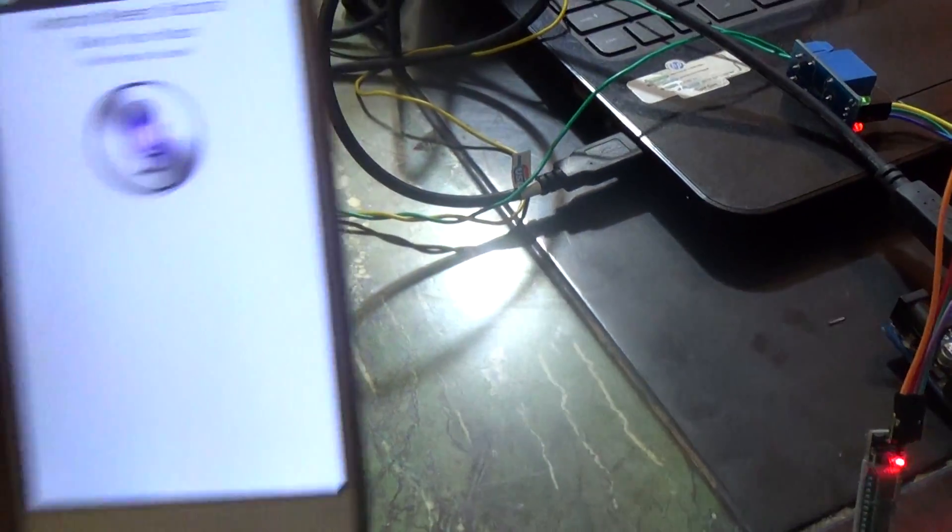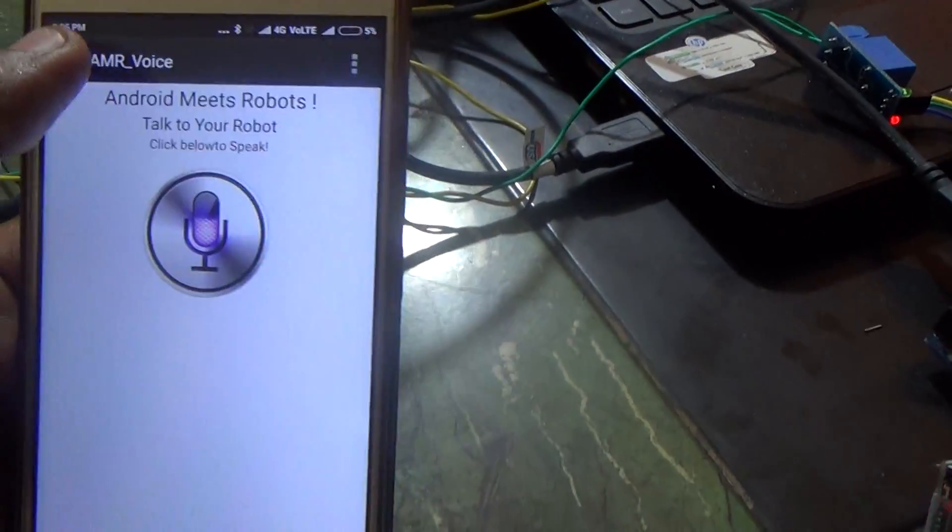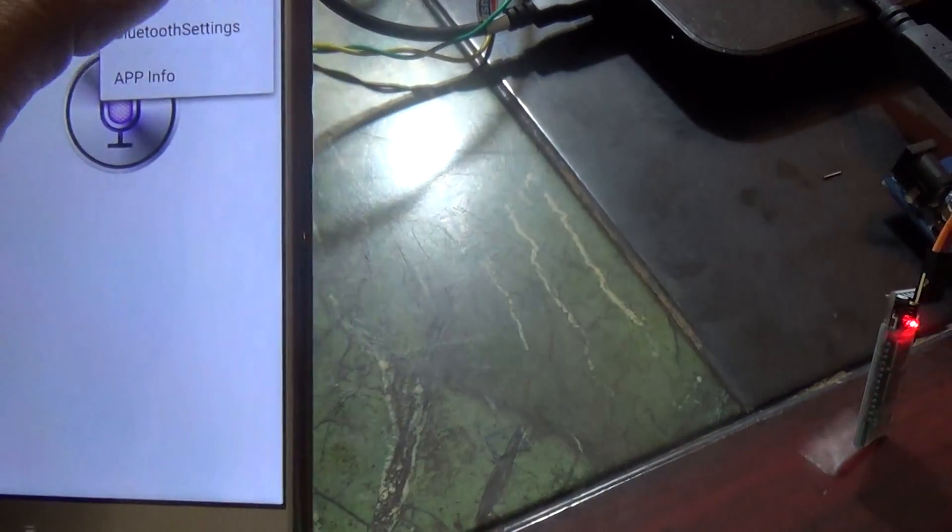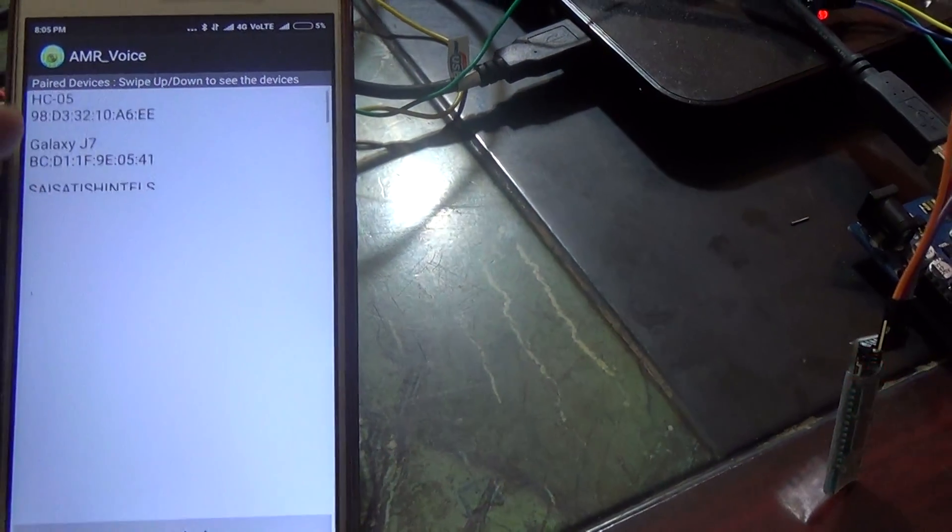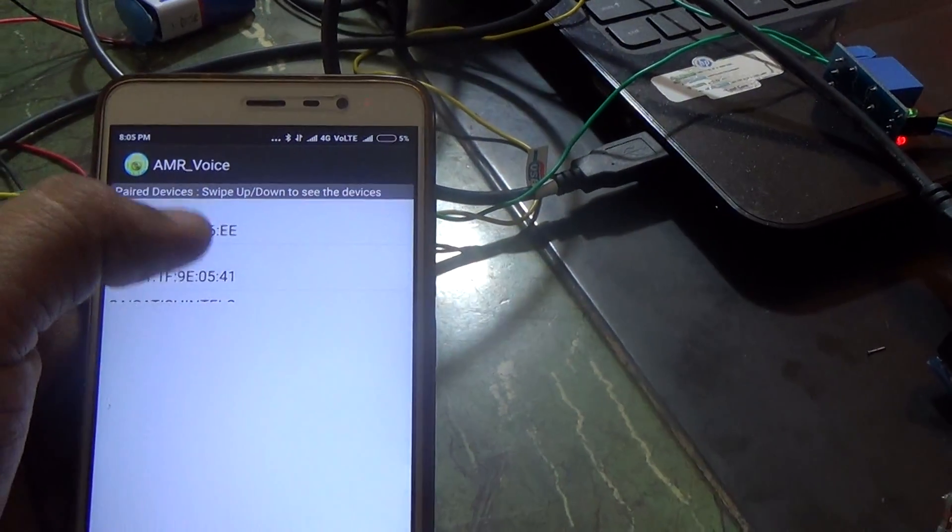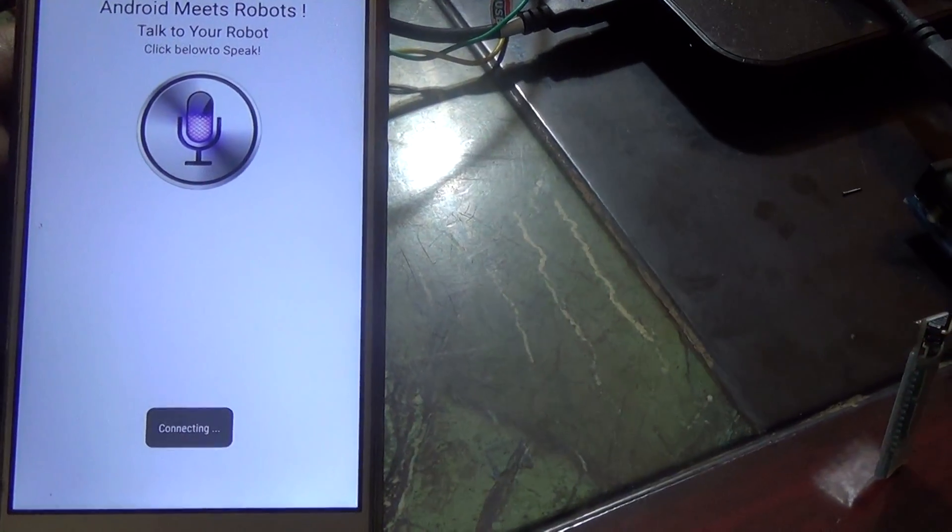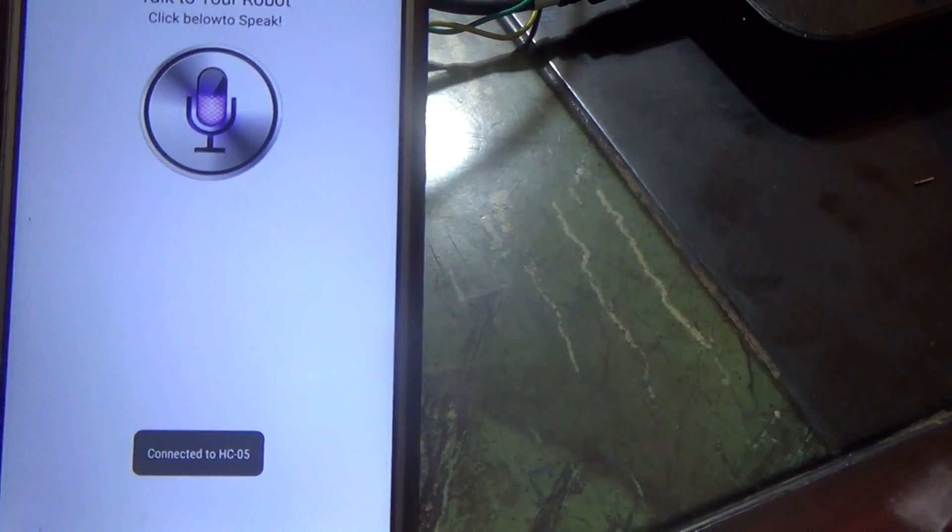After installing this application, connect to the Bluetooth devices. Here the list of devices will be displayed. Select your device. Within a few seconds, the device will be connected.